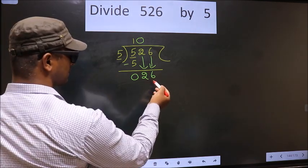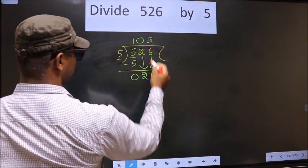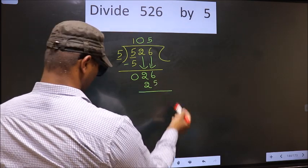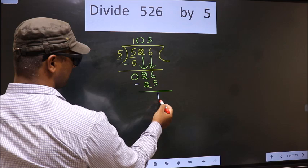So here we have 26. A number close to 26 in the 5 table is 5 fives, which is 25. Now you subtract. 26 minus 25 is 1.